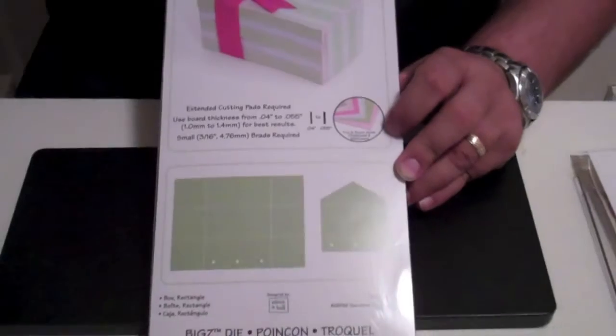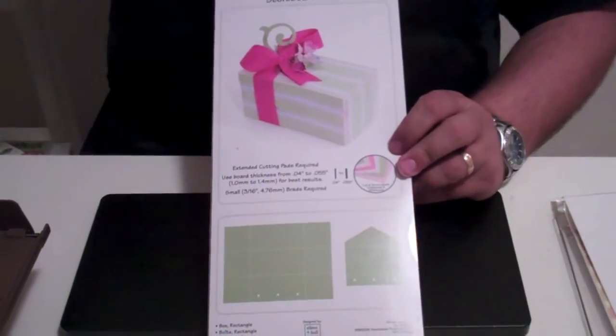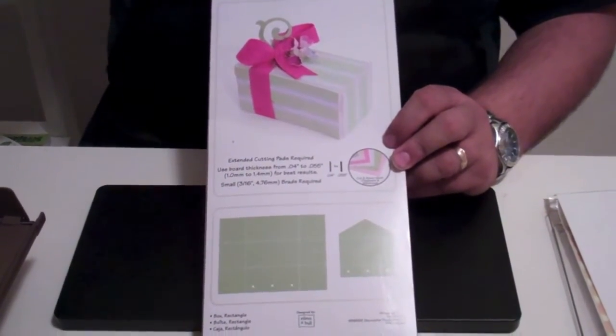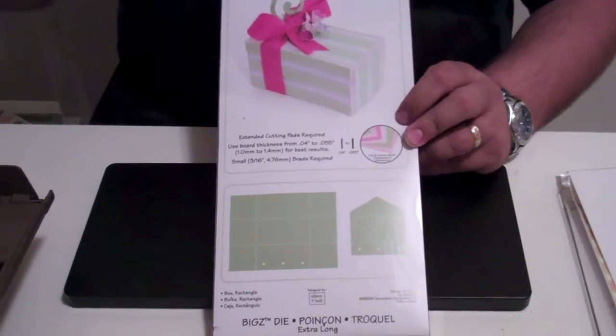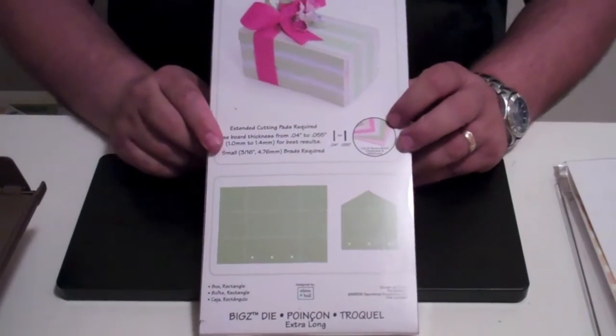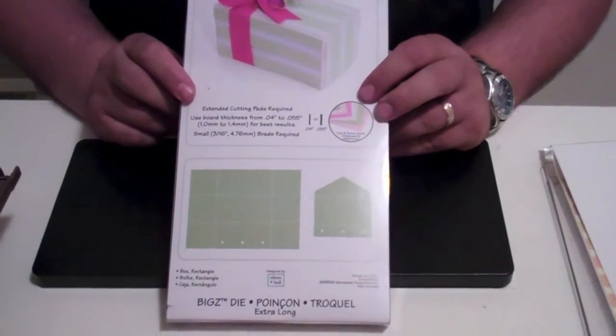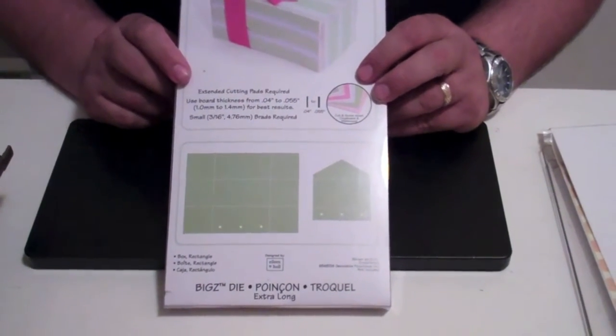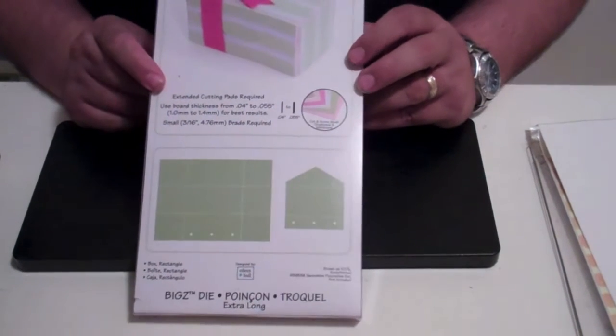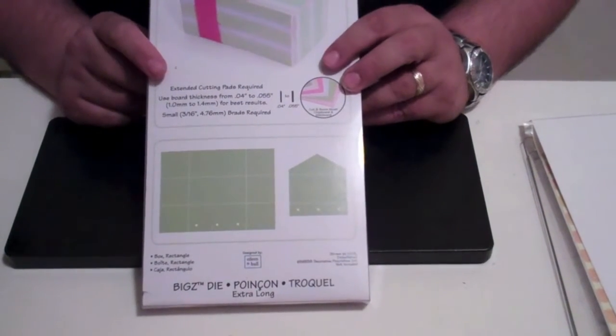Now you may say, well what is mat board? Mat board basically is that mat paper that they use for framing that makes a mat. So you can go to any framing store, Roberts Crafts sells sheets of mat board. You can buy it there, you can buy it in a small sheet, you can buy it in a large sheet. And you can also use chipboard.